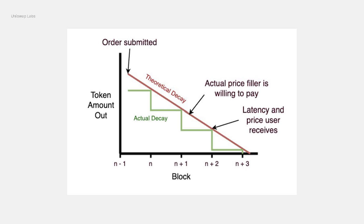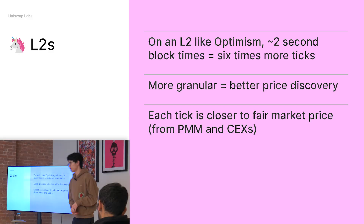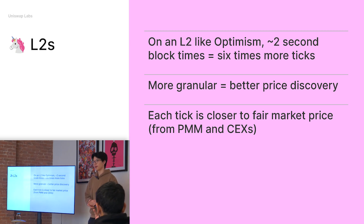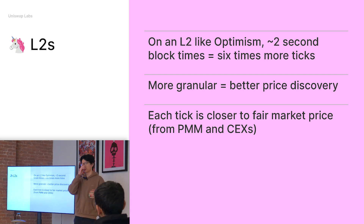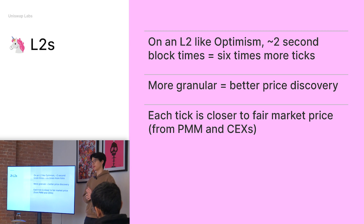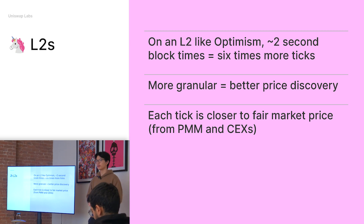Ideally the decay becomes linear. There are a lot of ways to solve this. One naive way is to just go on an L2 — for Optimism, two-second block time gives about six times more granularity. Hopefully that results in much better execution because each tick where the order can be filled is much closer to a fair market price. Especially because with Uniswap X we're trying to unlock PMM liquidity — private market maker liquidity and CEX liquidity — this makes sense because we want to give more granularity and match the off-chain trading experience.